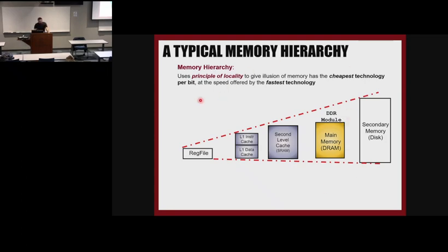Memory hierarchy uses the principle of locality — this is very important. It gives us the illusion of the cheapest technology per bit at the speed offered by the fastest technology. Looking at this example of the hierarchy: we have the register file, then first-level instruction cache and data-level one data cache, separated to avoid structural hazards. Then we have the second-level cache, then main memory, SSD, and disk.